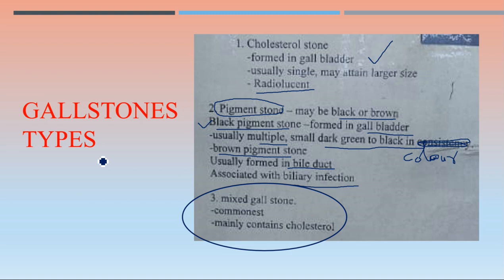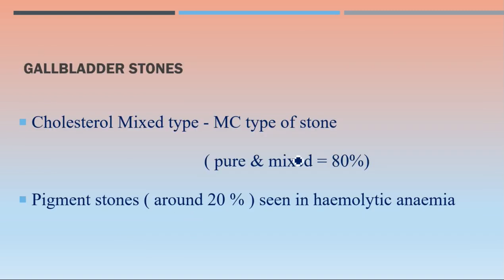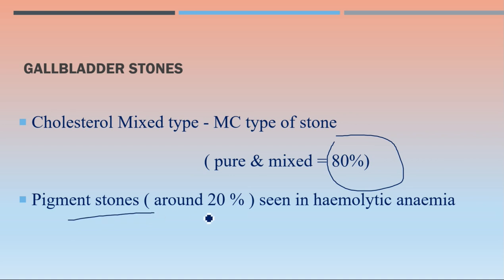Out of the three varieties, the mixed type of gallstones is the most common one, mainly containing cholesterol. Combining the pure cholesterol variety and the mixed variety, they amount to almost 80% of cases. Pigment stones - both black and brown - are responsible for around 20% of cases and are usually seen in hemolytic anemias.